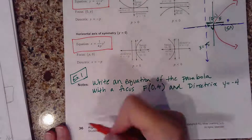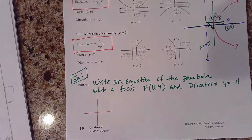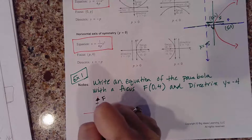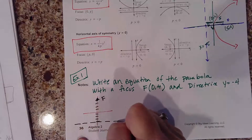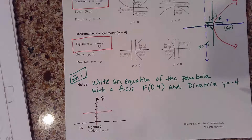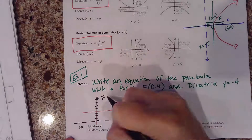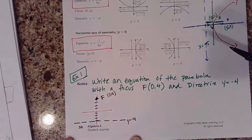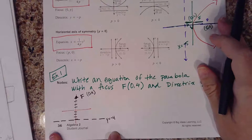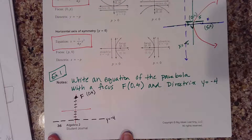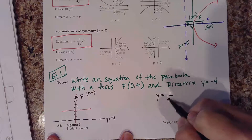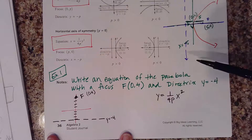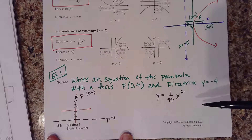If you were to write the equation, it might help to start by graphing what you know. The focus is (0, 4), and the directrix is a horizontal line at y equals negative 4. This gives me an idea of which equation I'm going to use. If the directrix is at y equals negative 4 and the focus is at (0, 4), I know I'm going to have a parabola that opens up and down, because the parabola has to go around the focus and be equally distant from that directrix line.